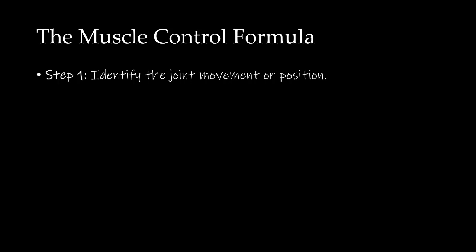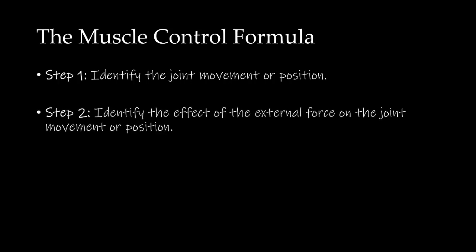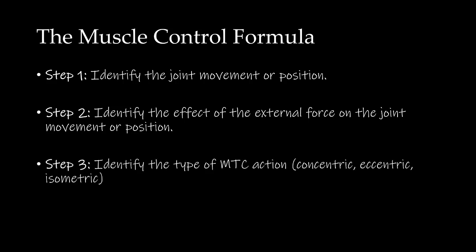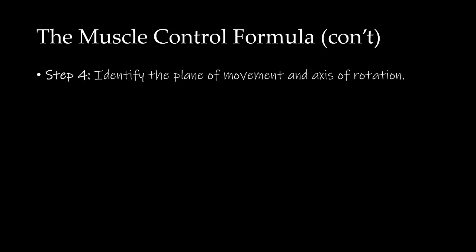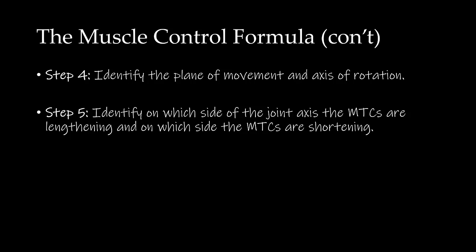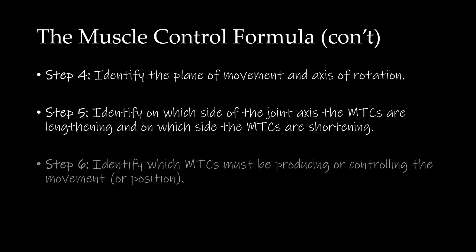To begin, let's review the muscle control formula. Step 1 is to identify the joint movement or position. Step 2 is to identify the effect of the external force on the joint movement or position. Step 3 is to identify the type of MTC action, whether that be concentric, eccentric, or isometric. Step 4 is to identify the plane of movement and the axis of rotation. Step 5 is to identify on which side of the joint axis the MTCs are lengthening and on which side the MTCs are shortening. And finally, we put it all together in Step 6 to identify which MTCs must be producing or controlling the movement or position.